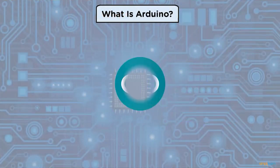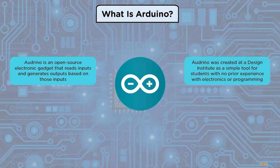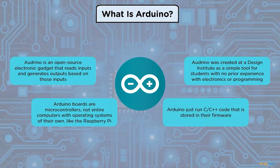Arduino is an open-source electronic gadget that reads inputs such as light on a sensor, a finger on a button, or a tweet, and generates output based on those inputs such as turning on an LED or activating a motor. Arduino was created at a design institute as a simple tool for students with no prior experience with electronics and programming. Arduino boards are microcontrollers, not entire computers with operating systems of their own. Arduino just runs the C++ code that is stored in the firmware.